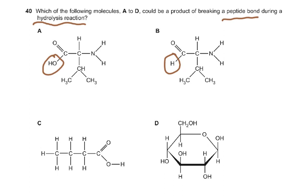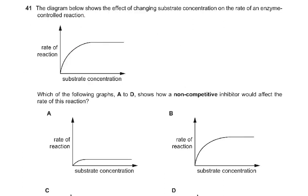The answer to question number 40 is A, because hydrolysis means water has been added. You have to know what condensation and hydrolysis are. When a peptide bond is broken, water is added — the hydrogen and the OH split — and that is why this particular structure is the correct amino acid product. Good question.